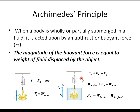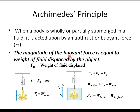According to Archimedes, the magnitude of this buoyant force is equal to the weight of the fluid displaced by the object. When the object is immersed in a fluid, it displaces some fluid, and the weight of that displaced fluid is equal to the magnitude of the buoyant force. So buoyant force equals weight of fluid displaced.